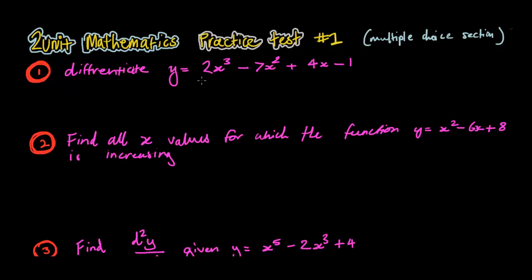First off, y equals 2x³ - 7x² + 4x - 1. All they want us to do is differentiate it, so it's just a simple differentiation. dy/dx equals 3 times 2, 6x² minus 14x plus 4. So that's the differentiated version. That should be your answer. And on the sheet, the answer for this is b.